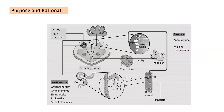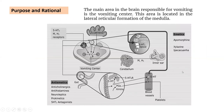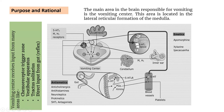If you see how emesis takes place, the area in the brain which is responsible for vomiting is the vomiting center, as shown here in the figure. This area is located in the lateral reticular formation of the medulla. The vomiting center receives input from many areas like the chemoreceptor trigger zone, vestibular apparatus, tractus solitarius, and the GI tract. All these reflexes are received by the vomiting center and as a result, vomiting takes place.